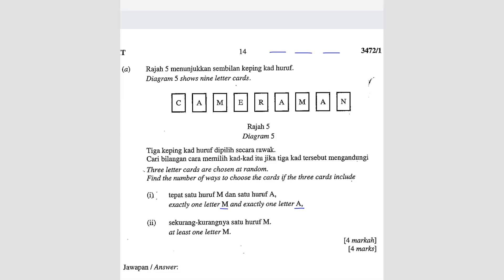In this case, they say exactly 1 letter M. So how many M here? 1, 2, right? So out of the 2, you just have to choose 1. So that means 2C1. Next, exactly 1 letter A. So how many A here? We got 1, 2, and 3. So you got 3 letters, 3 A's, and then you just have to choose 1. And then the last one, remaining.